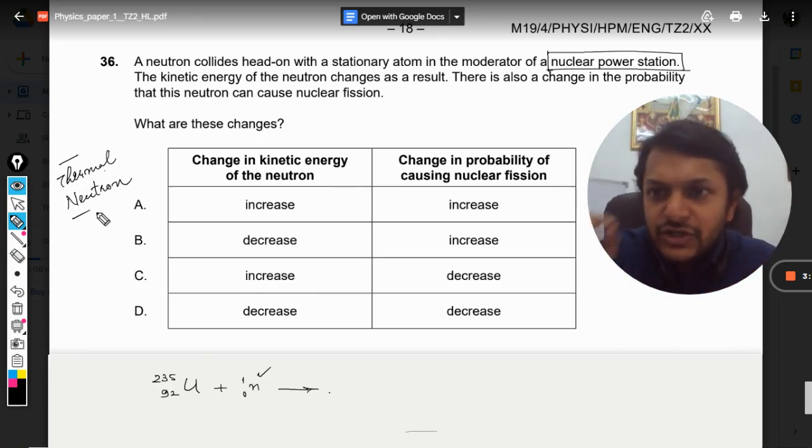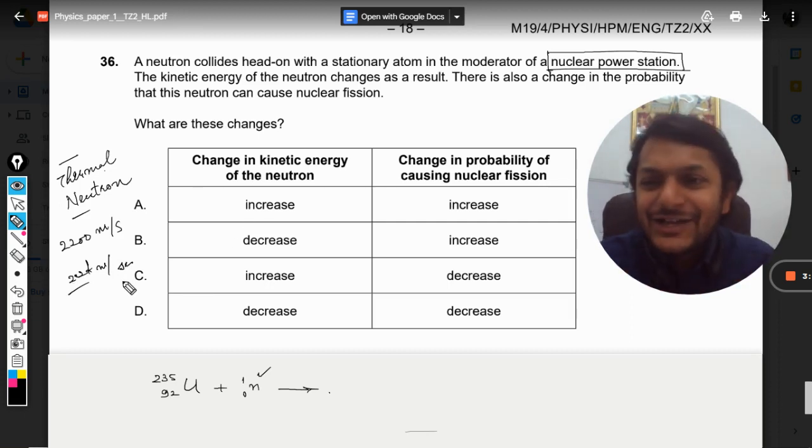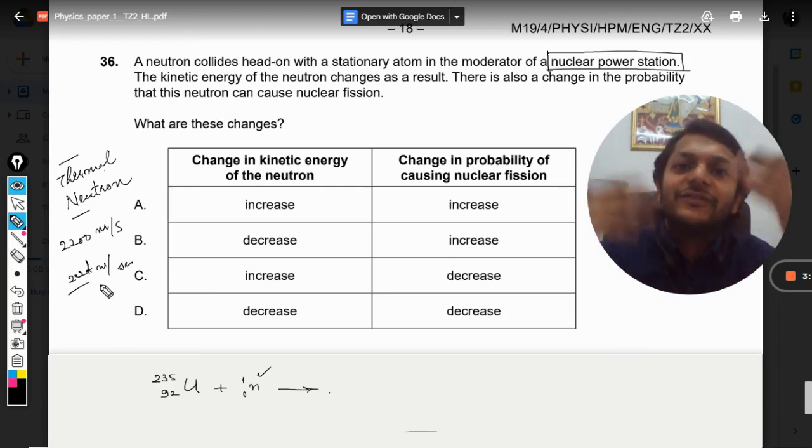This thermal neutron is a slow moving neutron and the velocity of this is ironically 2.2 kilometers per second. Well yeah, these are slow neutrons we are talking about, because these are neutrons. So 2.2 kilometers per second is the velocity of thermal neutron which is able to cause a fission reaction.